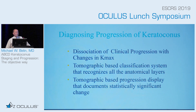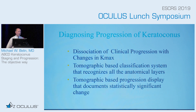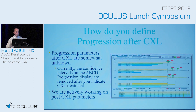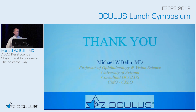So how do we diagnose progression of keratoconus? We recognize the dissociation of clinical progression with changes in K-max. We utilize a tomographic-based classification system that recognizes all the anatomical levels, and a tomographic-based progression display to document when we obtain statistically significant change. How do we define progression after cross-linking? That's something we're still currently working on, and hopefully by the end of the year we'll have some of that data to show you in the next iteration of the display. Thank you.